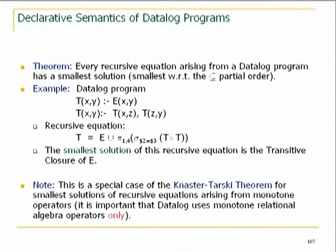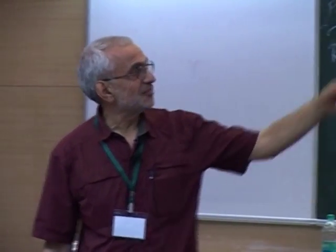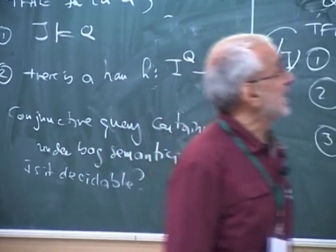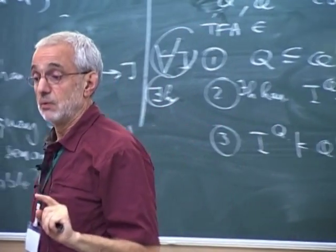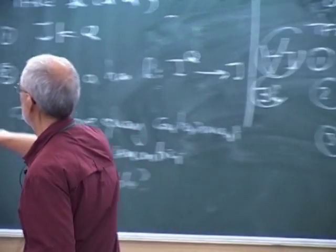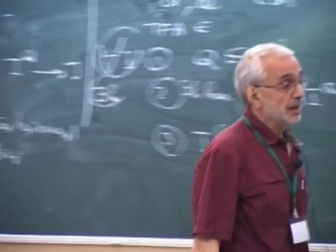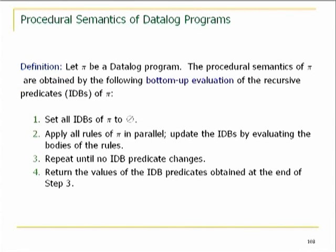Interestingly, Tarski's paper containing this theorem is his most cited paper, although it's one of his most trivial theorems. Now let's look at the procedural semantics — bottom-up evaluation. We have the given predicates and the intended predicates. We start by instantiating all recursive predicates to the empty set. The right-hand side is a conjunctive query, so we apply the rules, obtain new values for the heads, and update them. Then we plug in the new values and repeat until there is no change in the IDB predicates.